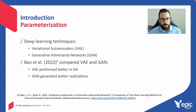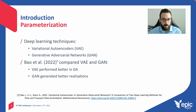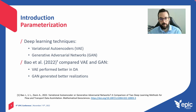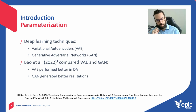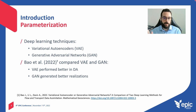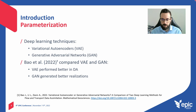Recently, some deep learning techniques have been used to perform this parameterization, for example variational autoencoders and generative adversarial networks, also called GANs. A recent work compared these two methods and concluded that the autoencoder performed better in data assimilation; however, GAN generated more realistic realizations.